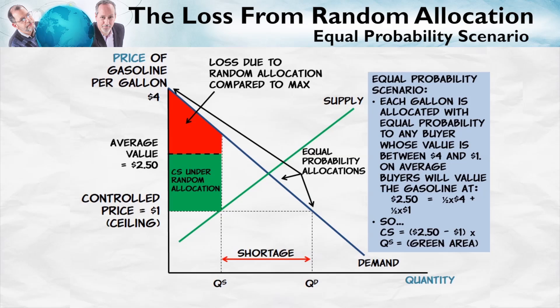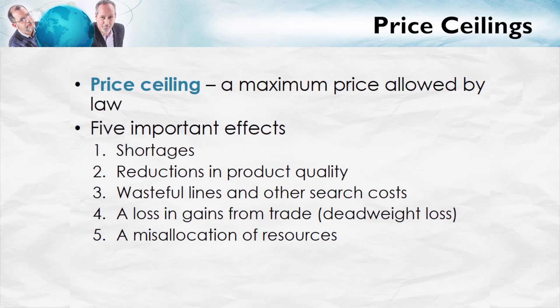That's just a diagrammatic way of illustrating what happens when we don't have the price system: oil no longer flows from its low valued uses to its high valued uses, so we get less value from the same resources. The resources become worth less because they're no longer allocated to the highest valued uses. We've now covered all five important effects of price controls: shortages, reductions in product quality, wasteful lines and other search costs, a loss in gains from trade, and a misallocation of resources.